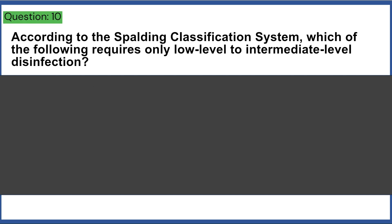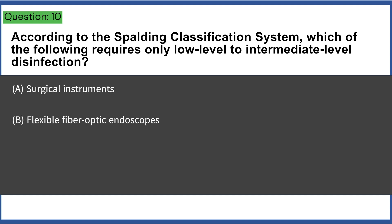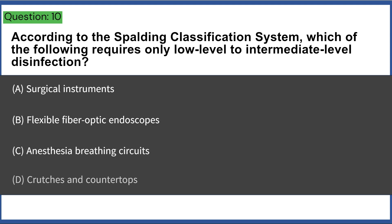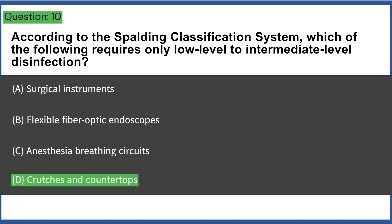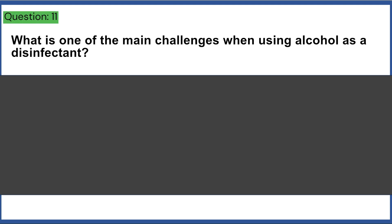According to the Spaulding Classification System, which of the following requires only low-level to intermediate-level disinfection? a) surgical instruments, b) flexible fiber optic endoscopes, c) anesthesia breathing circuits, d) crutches and countertops. Answer: D, crutches and countertops.